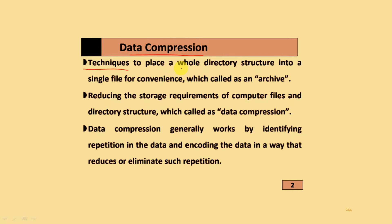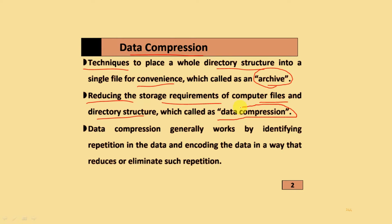Data compression techniques place a whole directory structure into a single file for convenience, which is called an archive. It also reduces the storage requirement of computer files and different directory structures. Data compression generally works by identifying the repetition in the data and encoding the data in a way that reduces or eliminates such repetition.